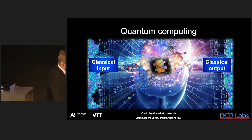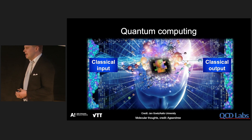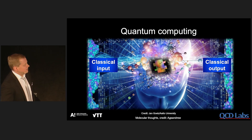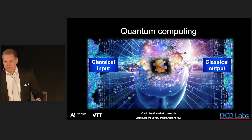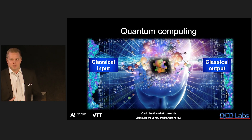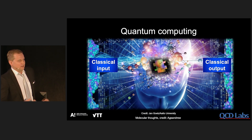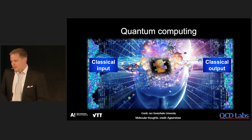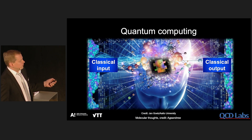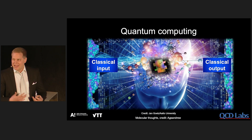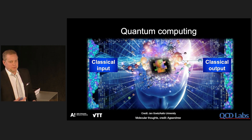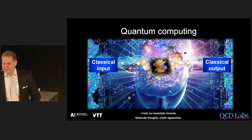Let's talk about quantum computers and quantum computing. In very simple terms, quantum computing is kind of a problem solver. You have an input, your classical problem, and you want a classical answer out. But what happens in between — from the input to the output — that's the actual quantum mechanics, the quantum computing that can't be done with a classical computer.